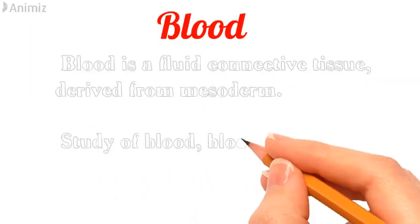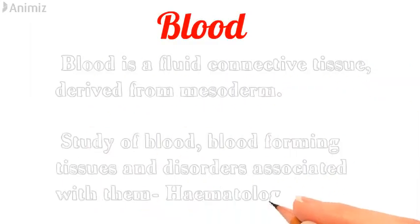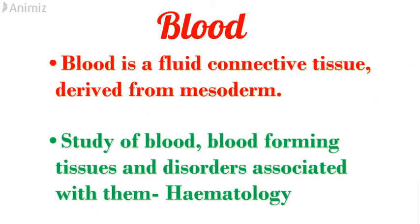Blood is a fluid connective tissue which is derived from mesoderm. Mesoderm is the middle layer of the three germ layers that developed during the embryonic development stage. The branch of science that deals with the study of blood, blood forming tissues and disorders associated with them is called hematology.